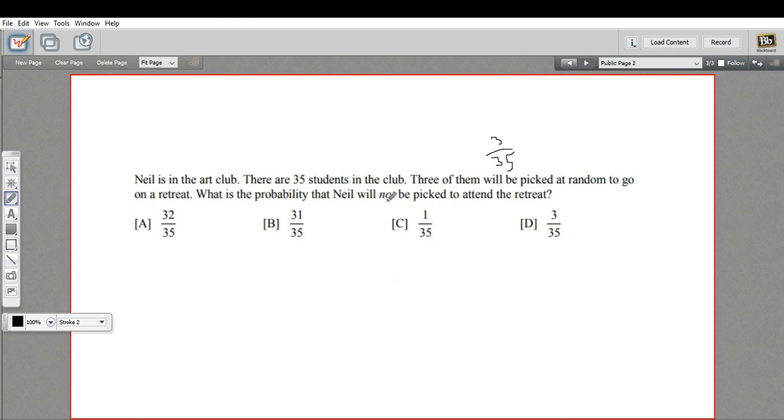the probability that Neil will not be picked. So the complement is all of the other possible events. Out of the 35 possibilities, three of them are being picked. 32 - I just subtract 35 minus 3 - 32 are the number of chances of not being picked. So the complement of this event is 32 out of 35.